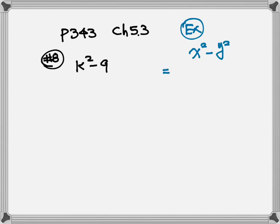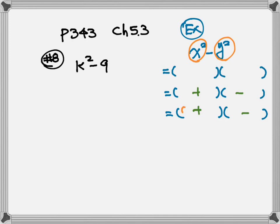Follow three steps. Step one: draw two empty parentheses. Step two: put a plus and a minus. Step three: here we have x squared and y squared, so put x in each one and y in each one. That's how we use the difference of two squares formula.